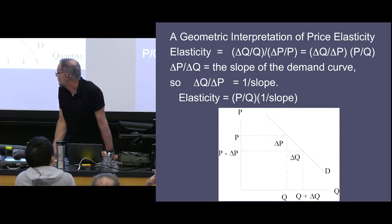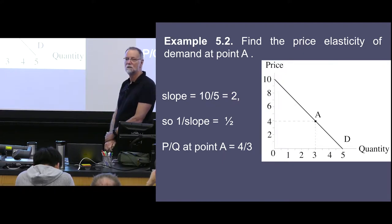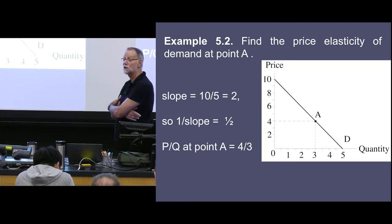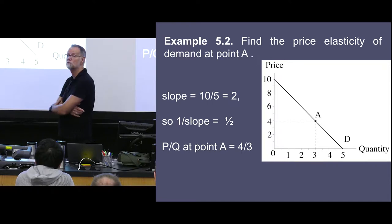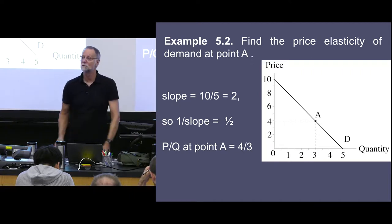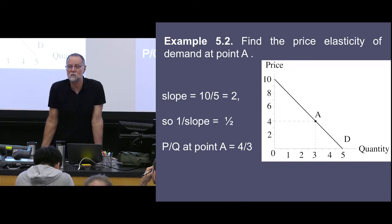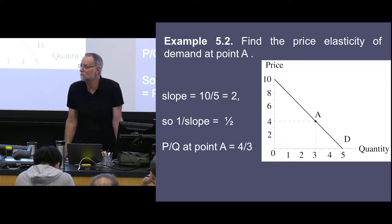What's the elasticity at point A? Start with the slope: rise over run = 10 over 5 = 2. One over the slope is 1/2. P over Q — we look at the graph — is 4/3. So 1/2 times 4/3 = 2/3. Everyone can get 2/3 without breaking a sweat.